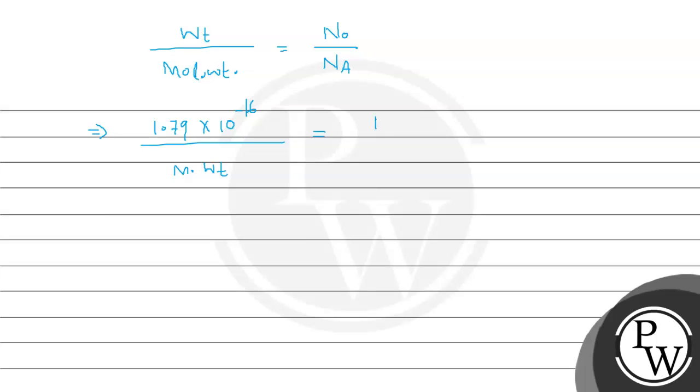And number of atoms is 1 × 10⁶, that is 1 million, and Avogadro's number is 6.022 × 10²³.